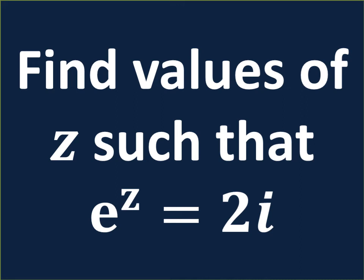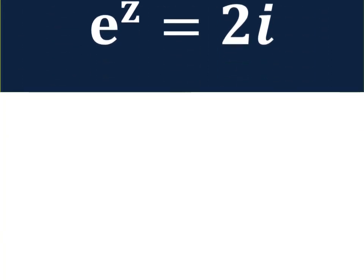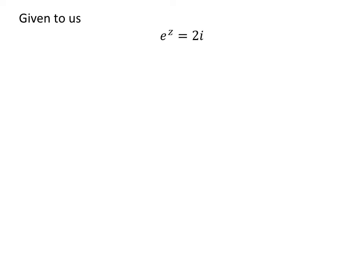In this video, we will learn to find values of Z such that exponential of Z is equal to 2 times iota, where iota is the imaginary unit. Given to us, exponential of Z is equal to 2 times iota.